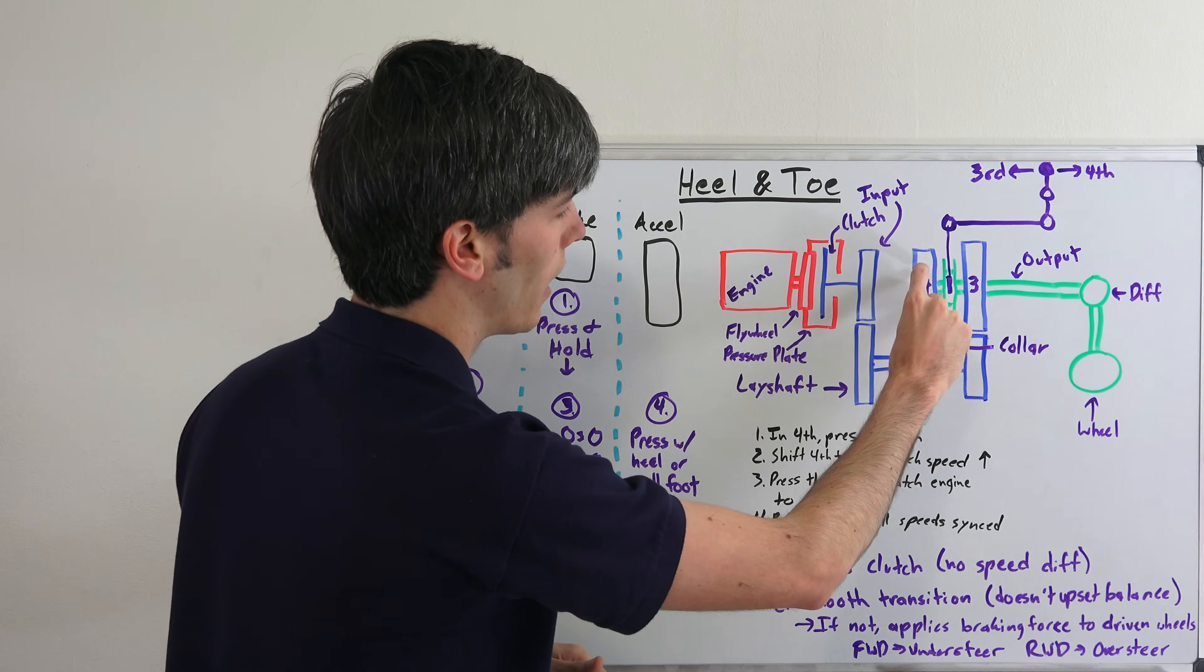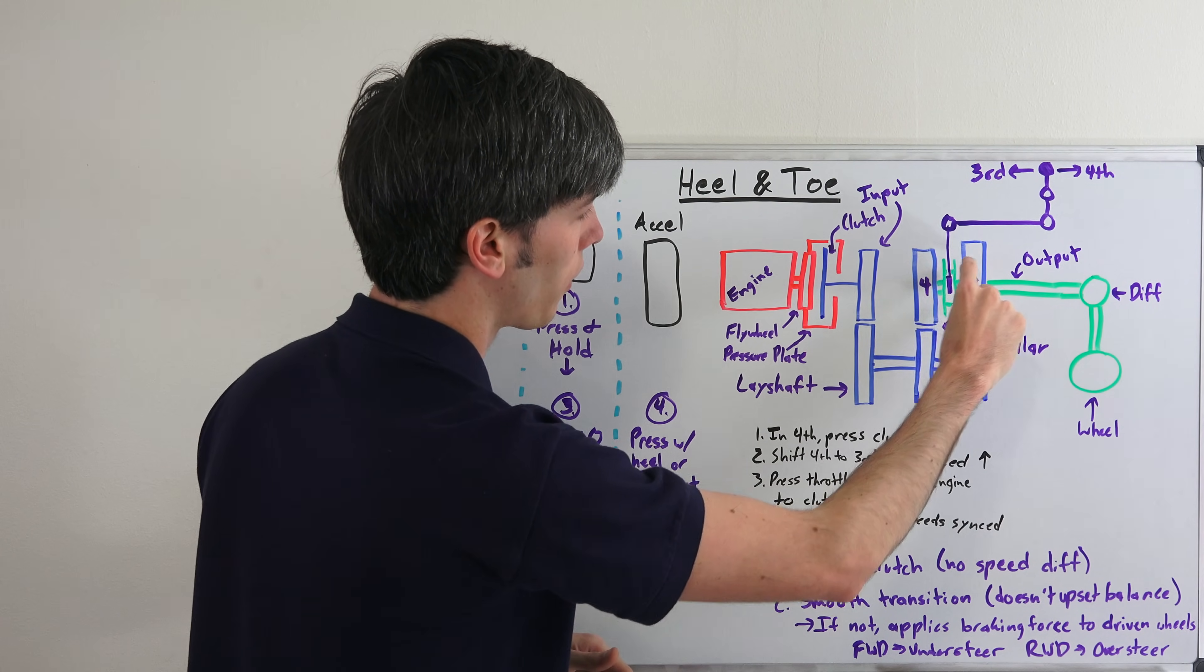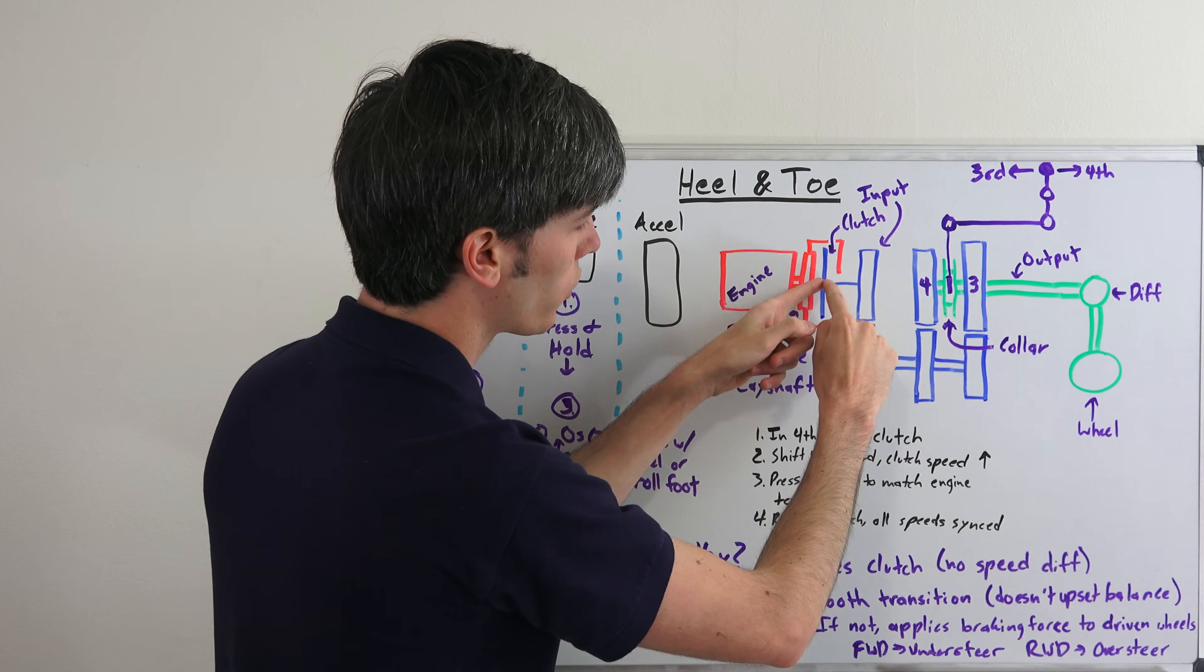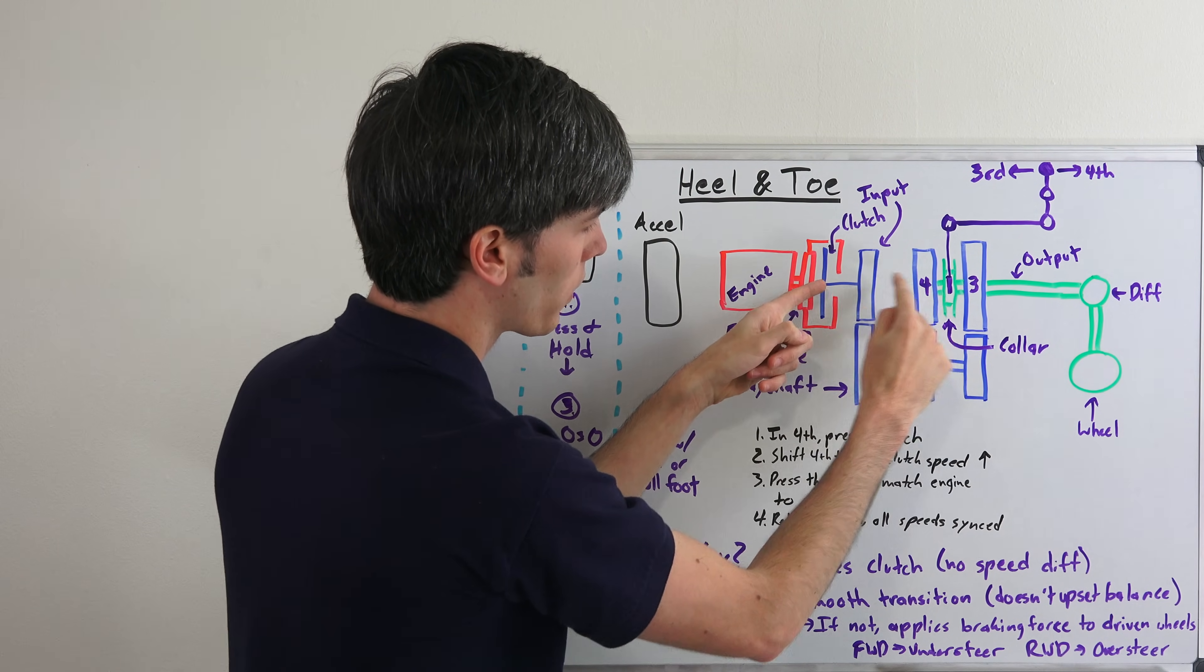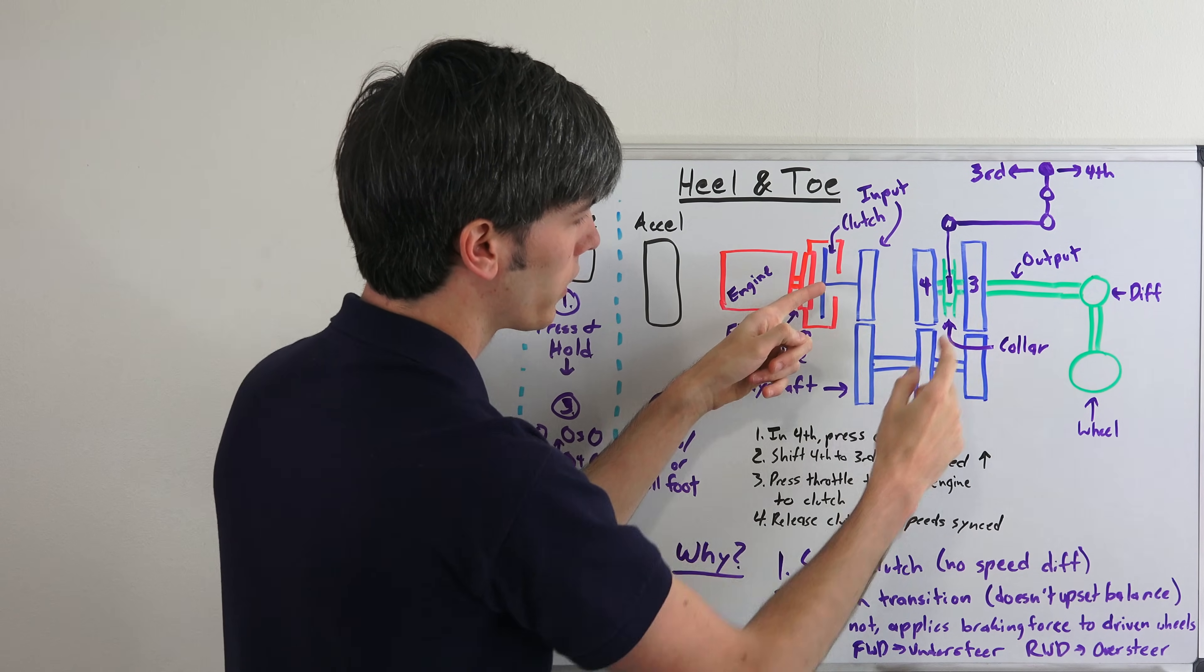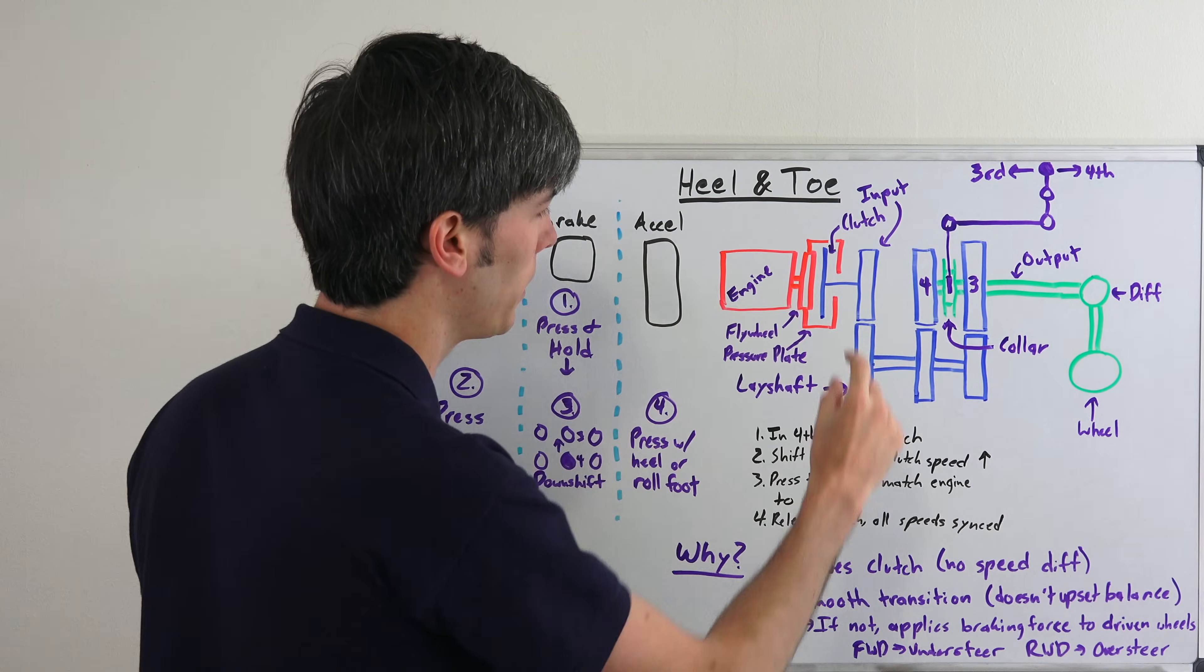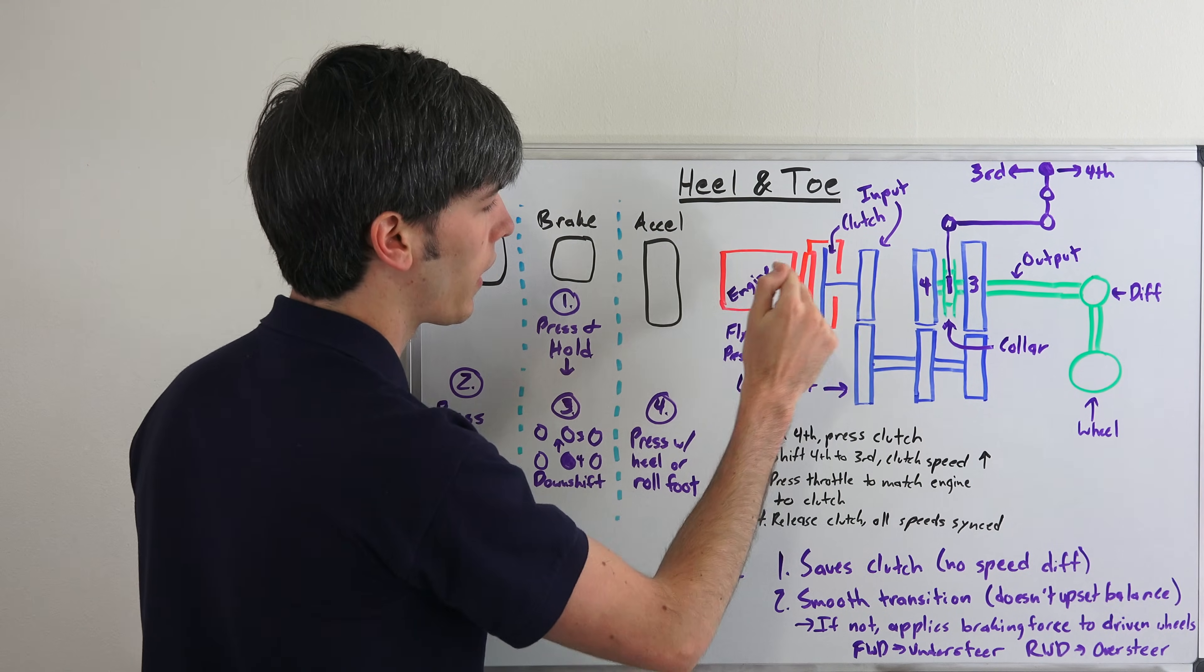Now we shift from fourth to third. So we bring this collar out of fourth gear and press it into third. So what that does is it changes what your clutch is spinning with. So your clutch was spinning with fourth gear, now it's going to be spinning with third gear, so obviously that's going to raise its speed.